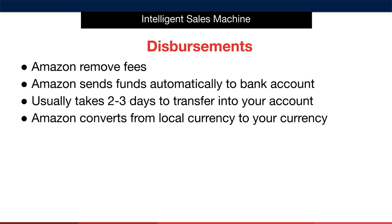If there is no account associated, then the funds roll on into the next period. This automatic transaction usually takes about two to three days to go from Amazon into your bank account.